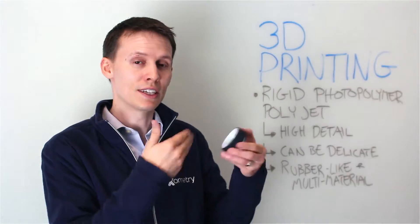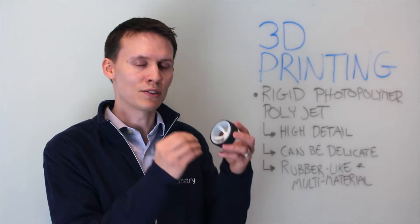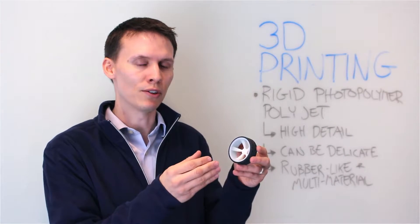The thing to note with PolyJet is that since it is high detail, it also may mean very thin parts can be very brittle and easily damaged.